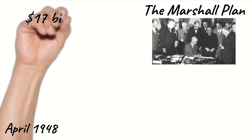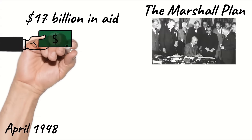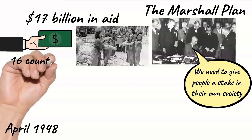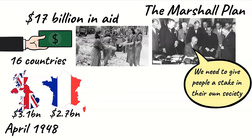In April 1948, General George C. Marshall, the US Secretary of State, announced the USA's plan which was named after him. The plan provided $17 billion in aid to help rebuild Europe. Since communism appealed to those with nothing to lose, the Marshall Plan aimed to give people a stake in their own society. Aid was given to 16 countries, of whom the largest beneficiaries were Britain who received $3.1 billion and France who received $2.7 billion US dollars.